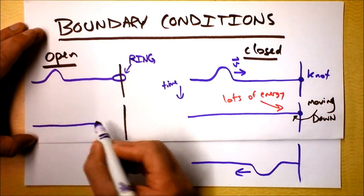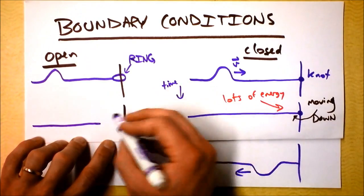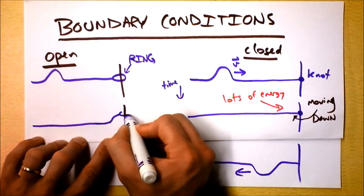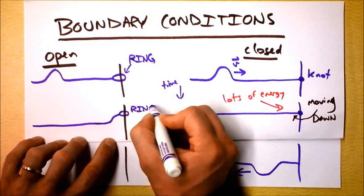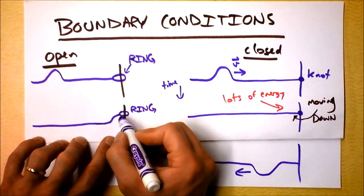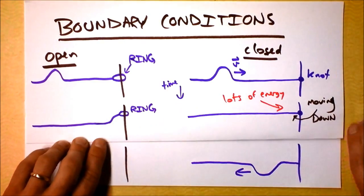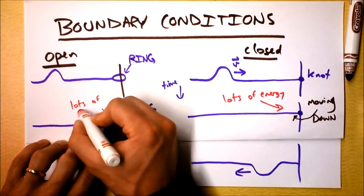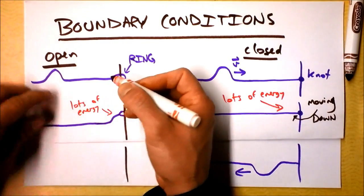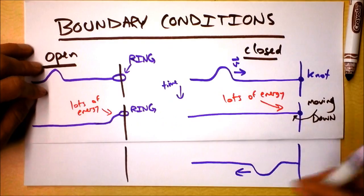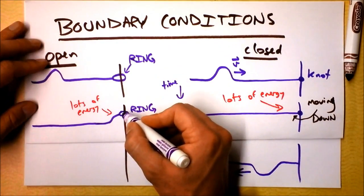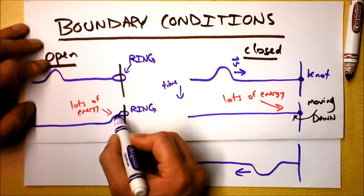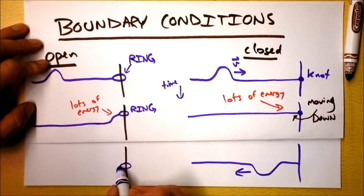As we get to this point where the wave hits, we see that because the ring can slide up and down on the post, the ring still shows some energy here. So let's label that lots of energy. Cool. We've got lots of energy right there. And then as the ring wants to get back down, the ring will ultimately move back to our equilibrium position, but this pulse will have been reflected.